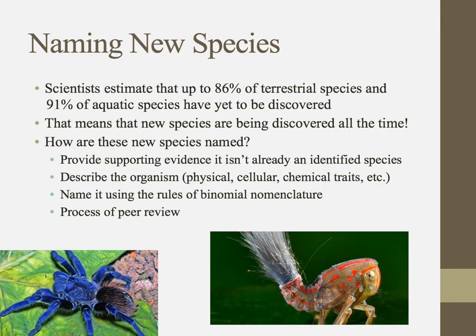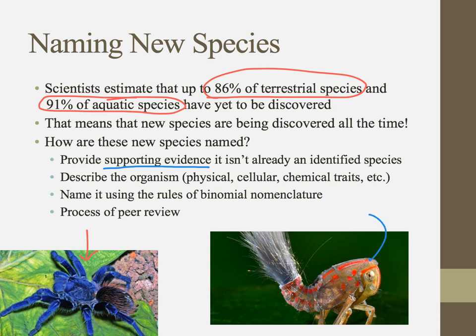Throughout human history we've done a pretty good job of identifying and naming species. But even though we've named millions, most species out there are yet to be discovered. They live in places that are difficult to access, or they are rare, or they blend in, or look similar to other species, or we just haven't found them yet. When we discover new species, one of the first things we have to do is come up with a name. First, you have to supply supporting evidence that it isn't already an identified species.